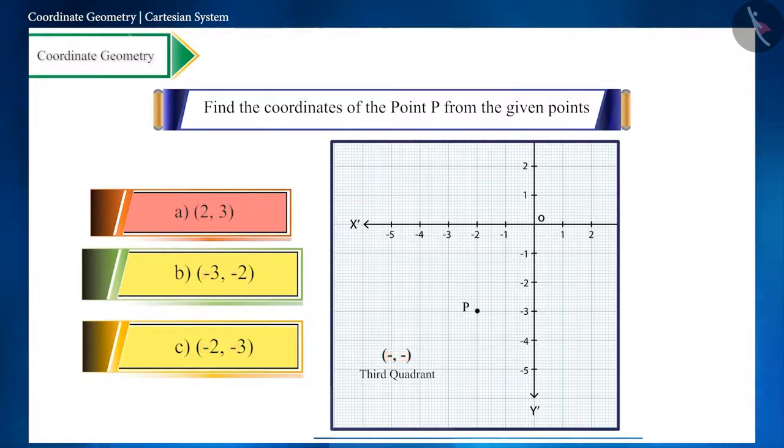If a perpendicular is drawn from point P to x and y-axis, then it intersects y-axis at -3 and x-axis at -2. In both of these options, these two are numbers, but friends, when writing coordinates...